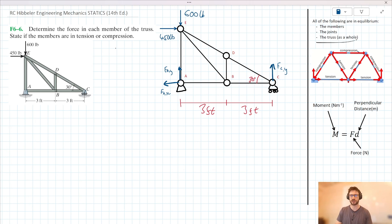So by inspection, when we consider the equilibrium of the truss as a whole, we can say F_AX is equal to 450, since it's countering this 450 pound external force here. And we can also say that 600, or this 600 pound force here is equal to the sum of F_AY and F_CY.